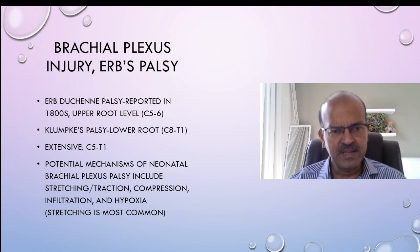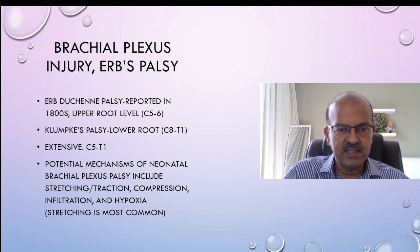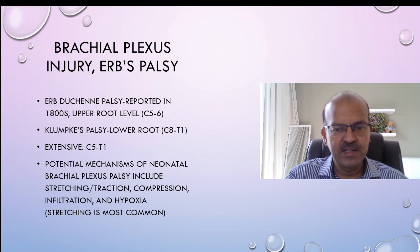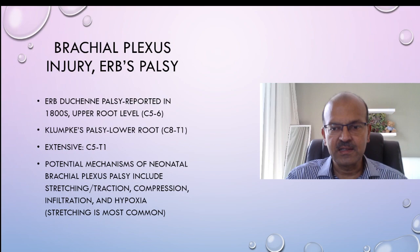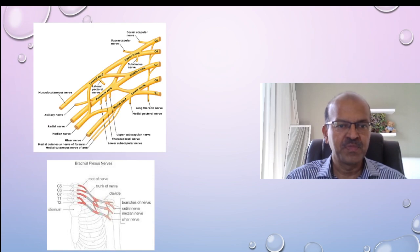I will be discussing the details of injury, but the most common mechanisms include stretching, traction, compression, infiltration, and hypoxia. The most common reason is stretching because of the pull on the neck when there is shoulder dystocia.